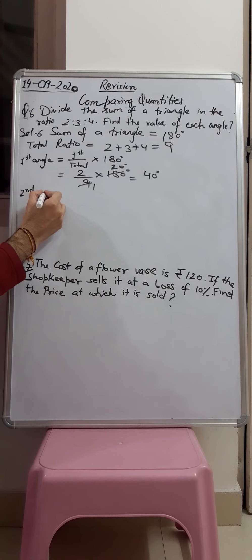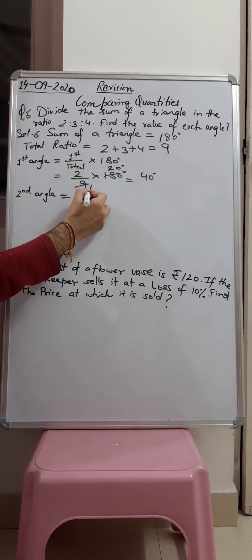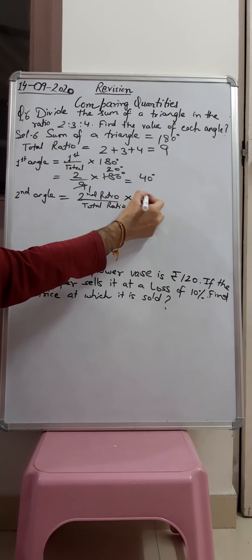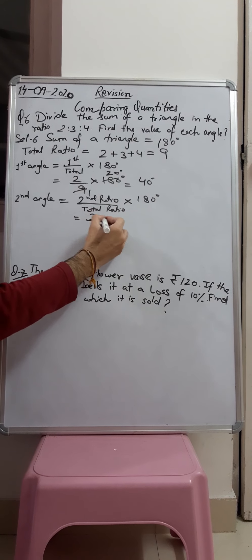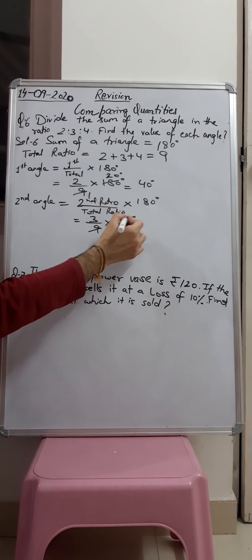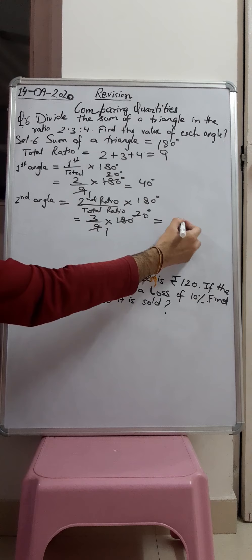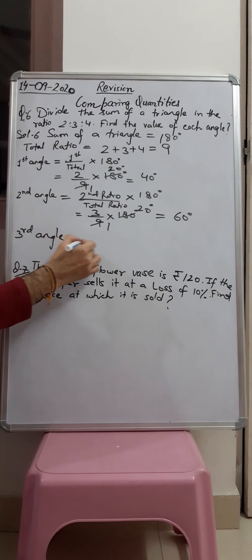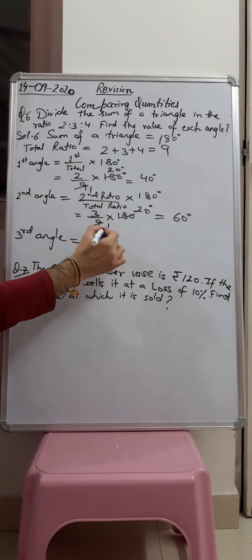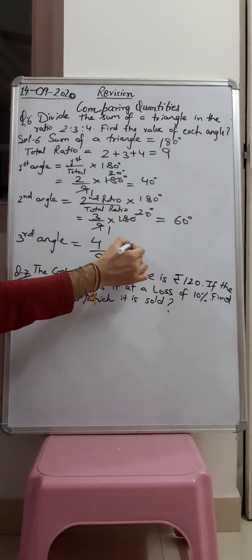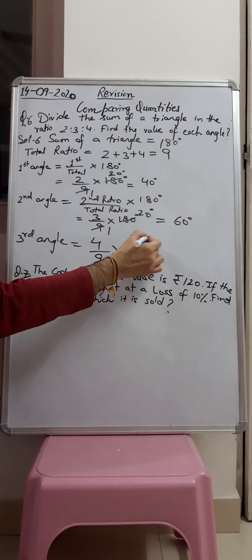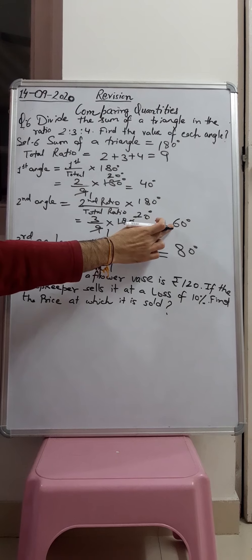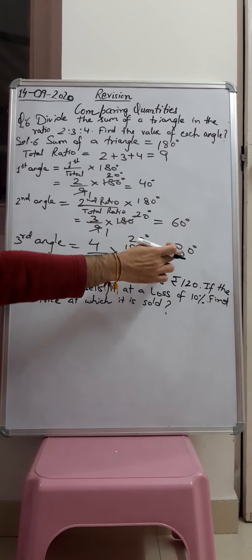Second angle: 3 upon 9 multiplied by 180 degrees. 9 into 180 gives 20, so 3 multiplied by 20 gives 60 degrees. Second angle is 60 degrees. Third angle: 4 upon 9 multiplied by 180 degrees, giving 4 multiplied by 20 equals 80 degrees. So the three angles are 40, 60, and 80 degrees. Adding them: 40 plus 60 is 100, plus 80 is 180 degrees. Verified.